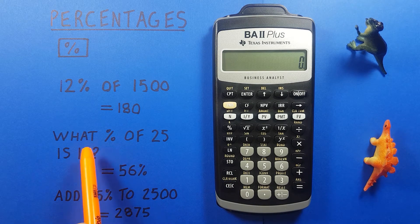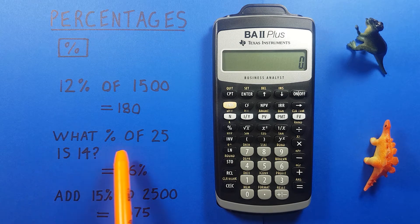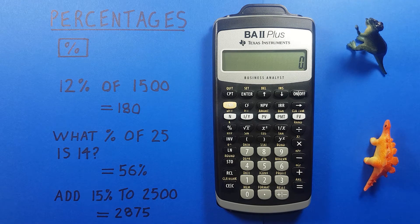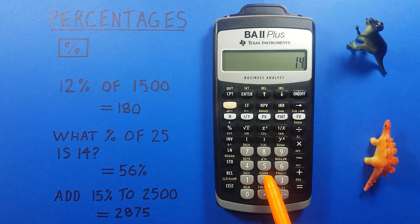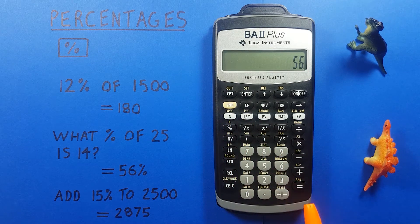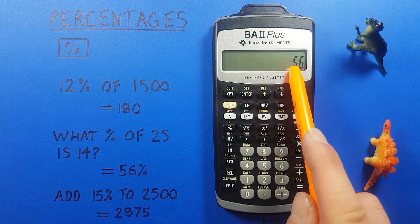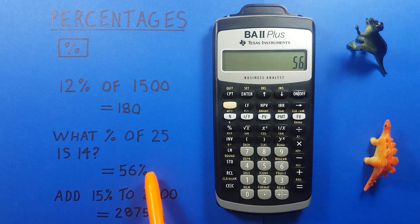How about what percent of 25 is 14? So for example we got 14 on a test out of 25. Well to do that we go 14 divided by 25 and then hit the percentage key and then press equals and we see we get 56. So 14 is 56% of 25.